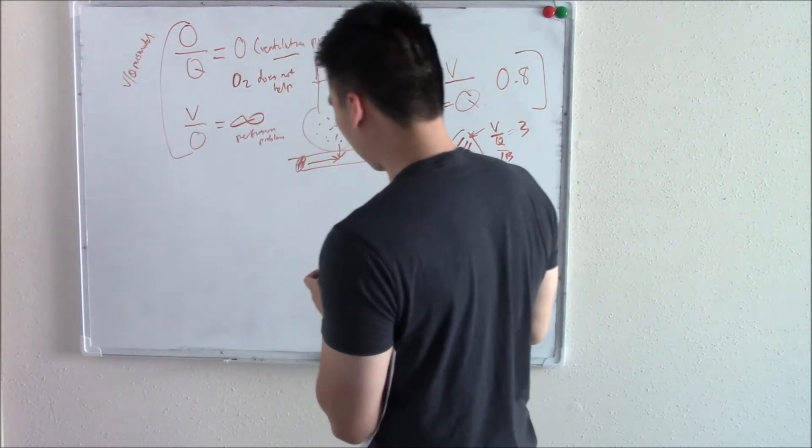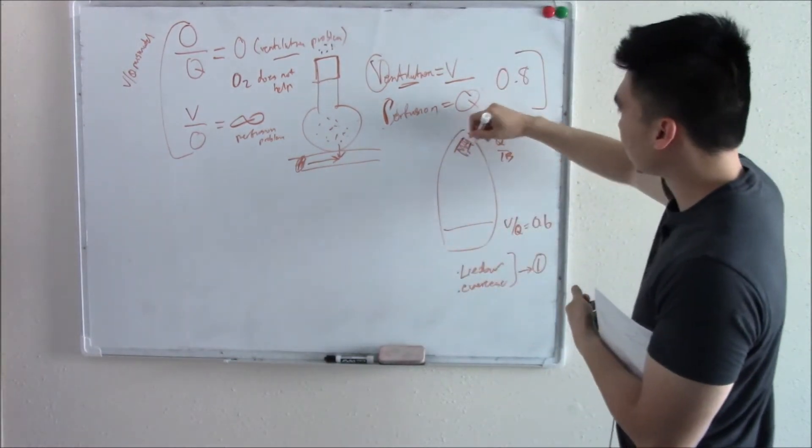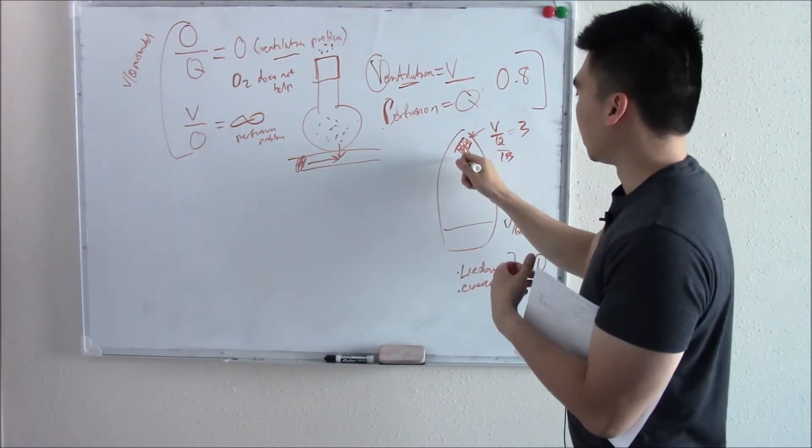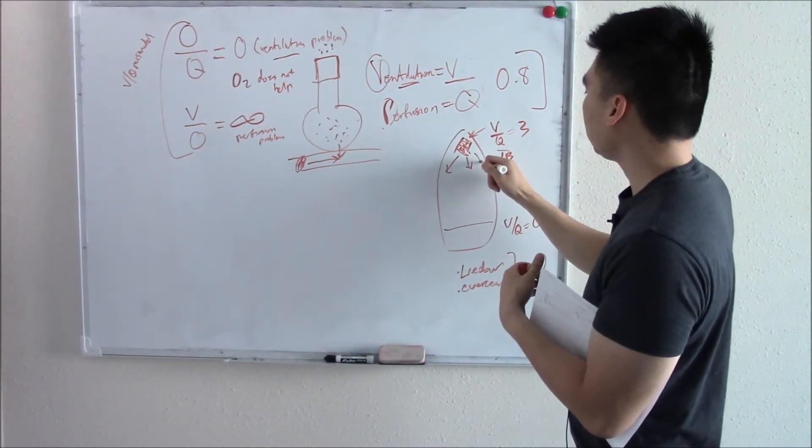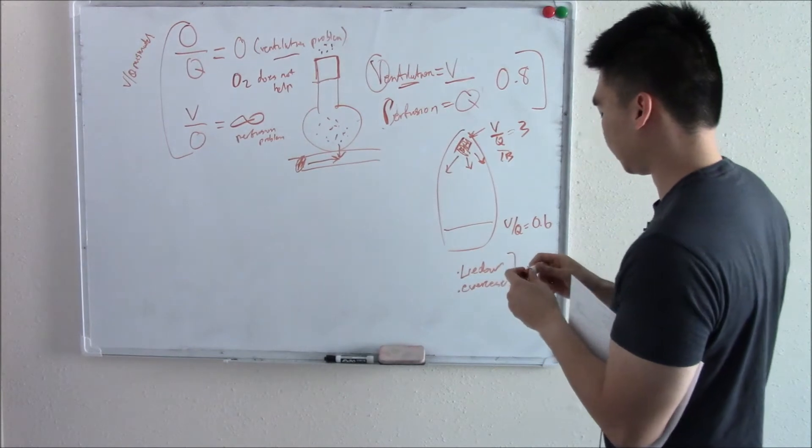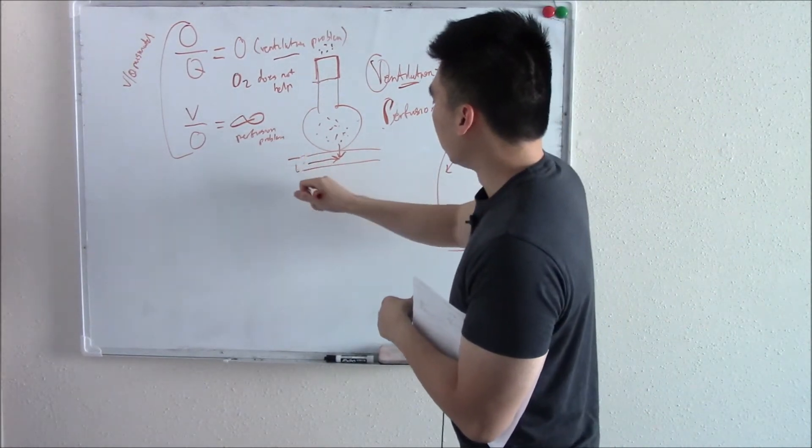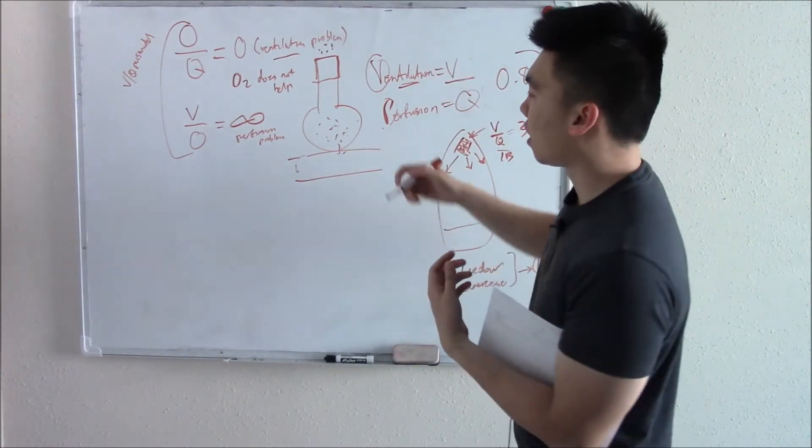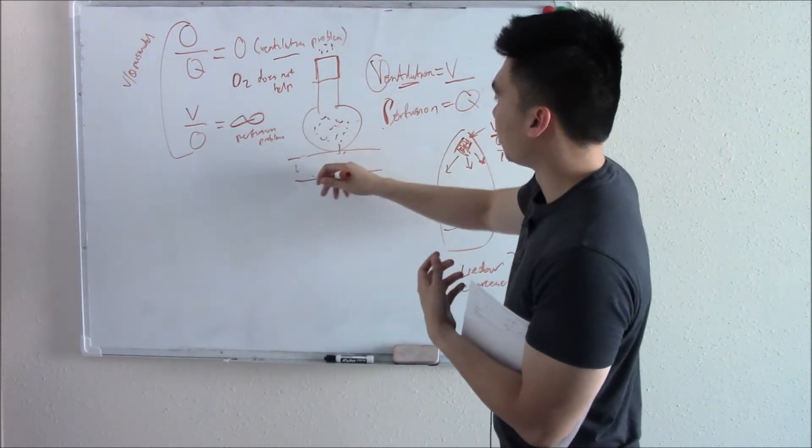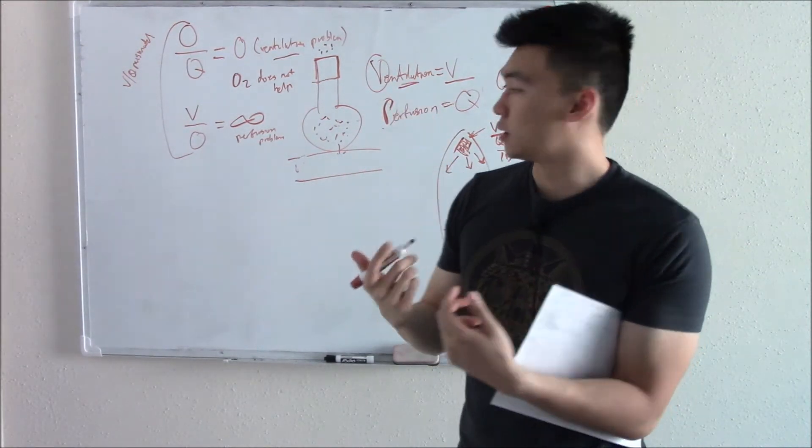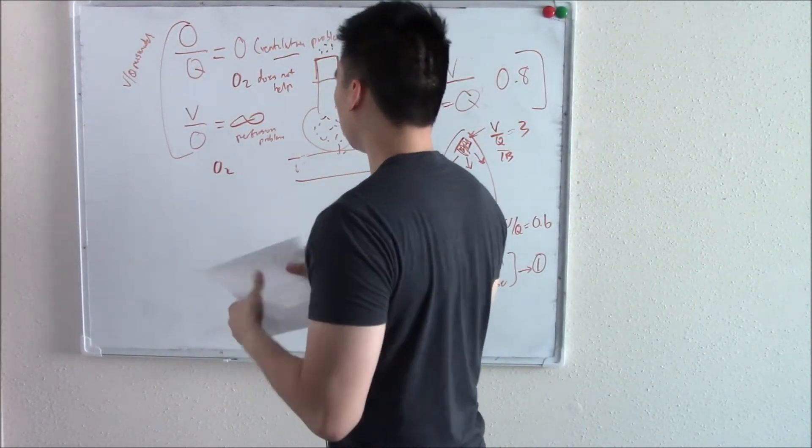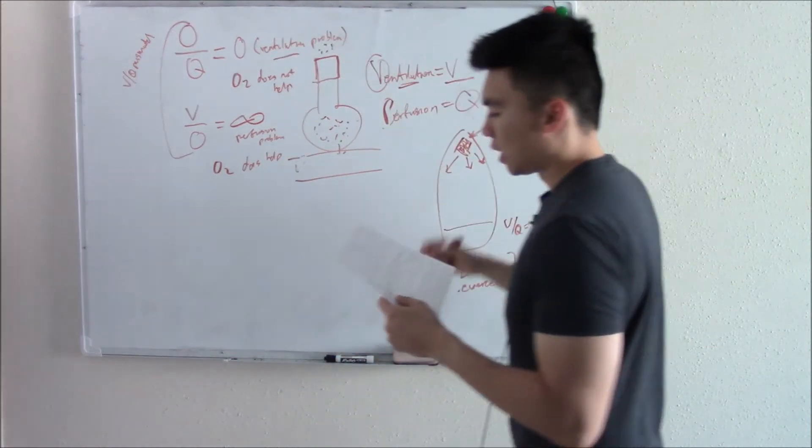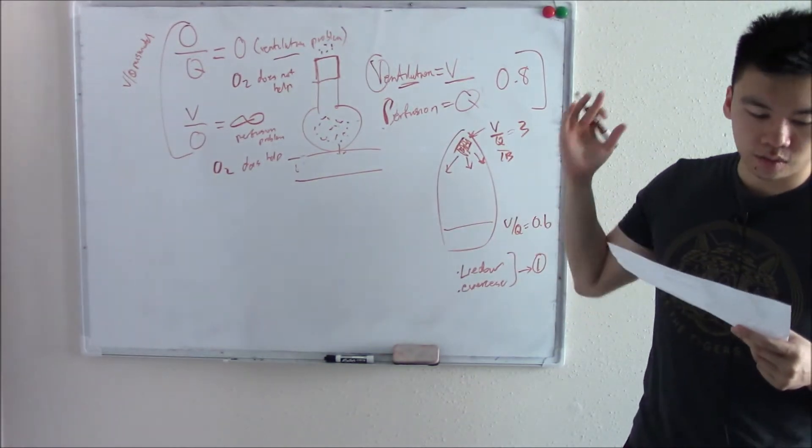In a perfusion problem, if there's a block here, what happens? Well, this part will vasoconstrict self-sacrifice and shunt blood elsewhere. So those vessels will be vasodilated, ready to pick up oxygen. If you give oxygen, more oxygen, then they'll be able to pick up that extra oxygen and this will help. So O2 does help. And that is VQ mismatch.